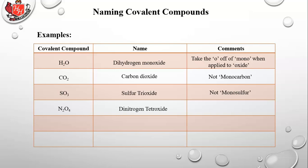Dinitrogen tetroxide. Take the A off of tetra when applied to oxide. So that's two nitrogens and four oxygens, dinitrogen tetroxide. Carbon tetrachloride. And finally, we have IF7, that's iodine heptafluoride.